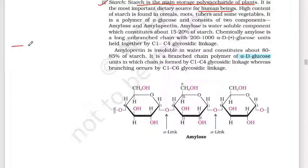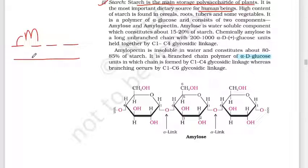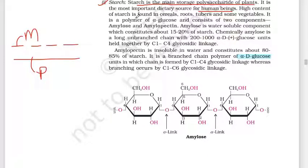When we talk about polysaccharides, they form a polymer. Starch is a polymer of alpha-glucose. Alpha-glucose units are joined together, and starch has a glycosidic bond holding these units.